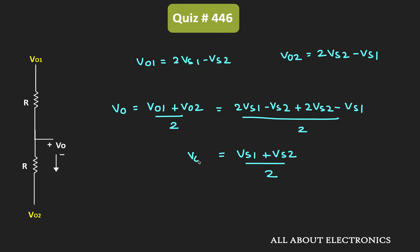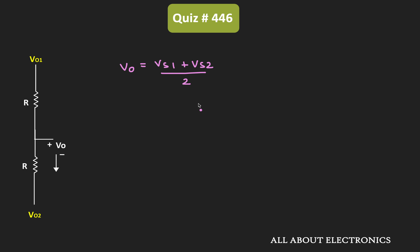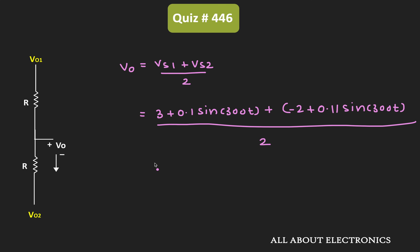We got the output voltage VOout in terms of VS1 and VS2. Now substituting the given values: VS1 = 3 + 0.1·sin(300t) V and VS2 = −2 + 0.11·sin(300t) V. The output voltage becomes VOout = (1/2) + 0.21·sin(300t) / 2.